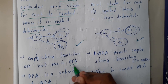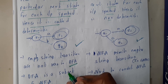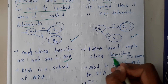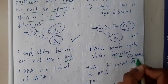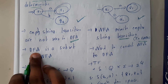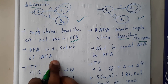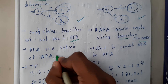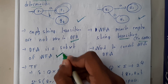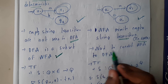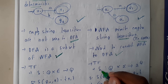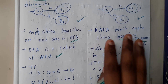Empty string transitions are not seen in DFA, whereas NFA permits the empty string transition — that is epsilon NFA, to be clear. Now, DFA is a subset of NFA. We have discussed this when going through NFA, whereas we need to convert NFA to DFA — conversion is possible.